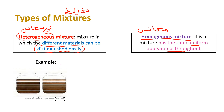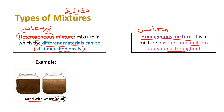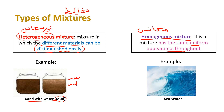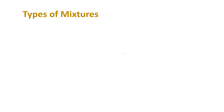Examples of heterogeneous mixtures are sand with water, or mud. You can tell that there is water and there is sand — you can distinguish between them: غير متجانس. But homogeneous mixtures — like seawater — contain salt and water. You can't tell just by looking; you'd have to taste it to know it's actually water and salt.